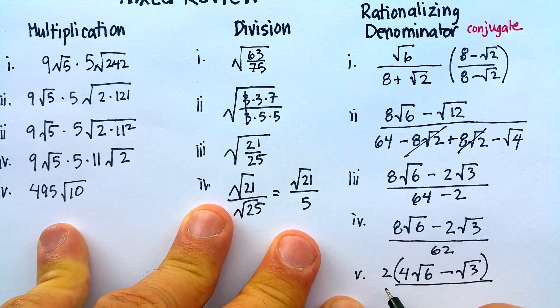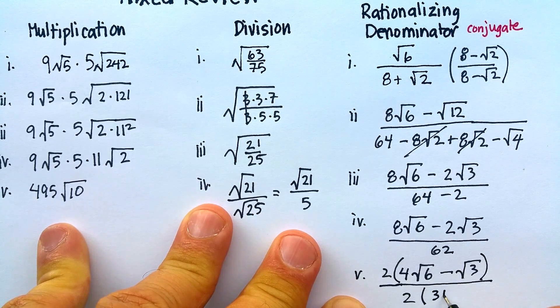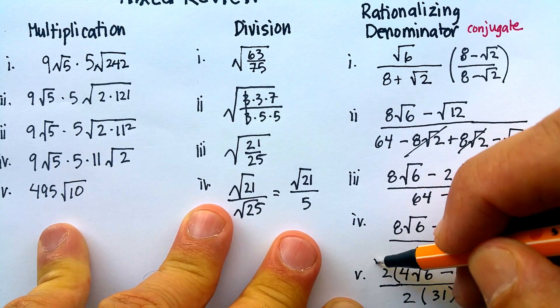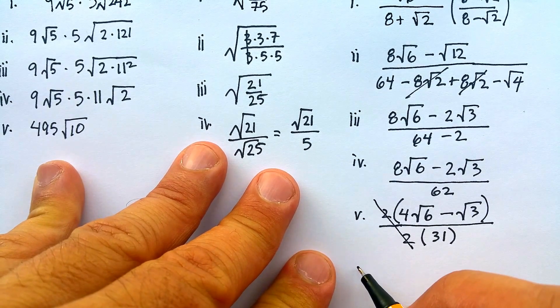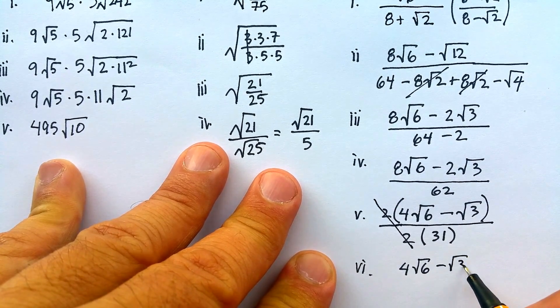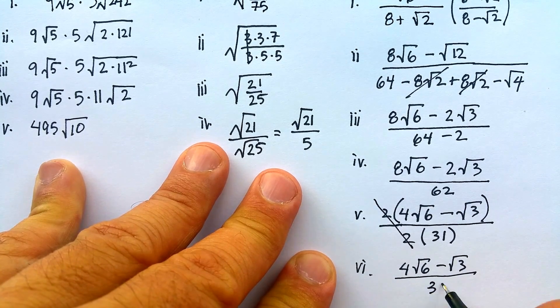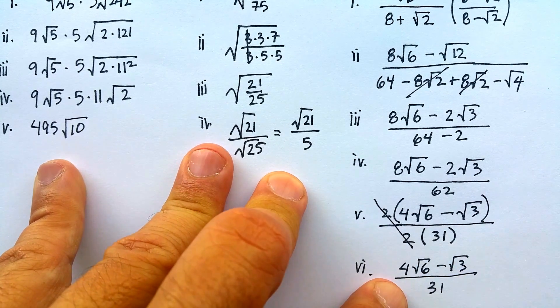Let me show you how I do that. Just factor the 2 out of there. And then I'm going to factor a 2 out of here. And then I can cross out that 1. And the final answer, then, would be 4 radical 6 minus radical 3 all over 31. Okay, I hope that was helpful for you.